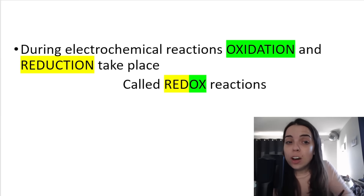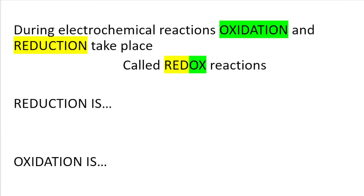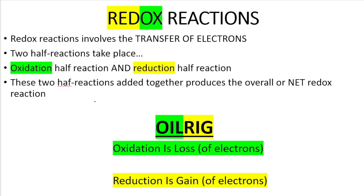Redox stands for reduction and oxidation. Using the acronym OIL RIG, we know that oxidation is loss of electrons — that's where OIL comes from. Reduction is gain of electrons. These two half reactions — the oxidation half reaction and the reduction half reaction — when added together, produce the overall redox reaction.